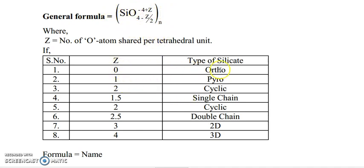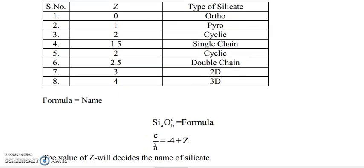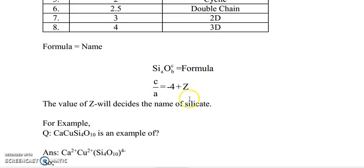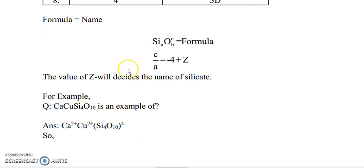From the Z value and by the help of this table, you can identify the name of the silicate. The general form of a silicate is SiₐOᵦ with charge C, where C is the charge of the silicate ion, A is the number of silicon atoms, and B is the number of oxygen atoms. C divided by A equals minus 4 plus Z. By using this formula, you can identify the Z value, which will then decide the name of the silicate.